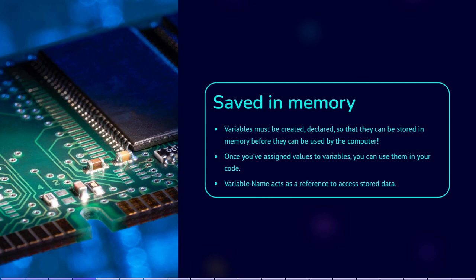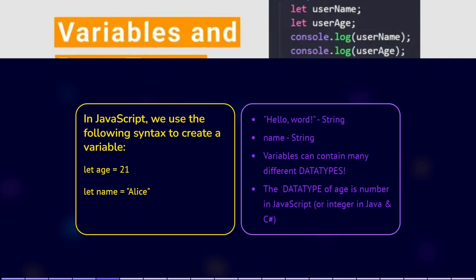In JavaScript, we use the following syntax to create a variable: let age equal 21, let name equal 'Alice'. Variables can contain many different data types, but only one at a time. This data type above is a string. By using the equal sign, we assign a value to the variable. Variables must be declared so that they can be stored in memory before they can be used by the computer.